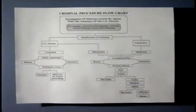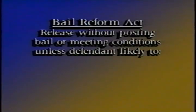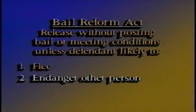The final matter addressed under Rule 5 is whether the defendant should be released or detained pending trial. As shown on the flowchart, this determination can be made more than once in the process. The decision is based on the same statute regardless of whether made at the initial appearance or at the arraignment — the Bail Reform Act of 1984, contained in Title 18 of the United States Code. The act requires every accused to be released without posting bail or meeting special conditions unless the judicial officer finds that the defendant is likely to flee, or is a danger to any other person or to the community. In such event, the magistrate judge must impose the least restrictive condition or combination of conditions that will reasonably assure the defendant's appearance and the community's safety.